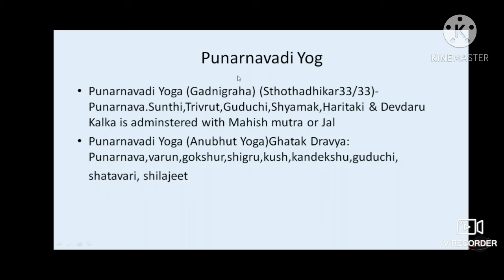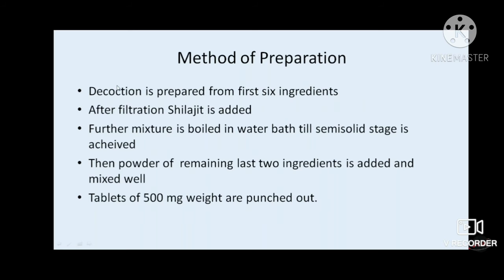One Punarnavadi yoga mentioned in Gadanigraha in Sothara Gadhikara consists of punarnava, shunti, trivrit, guduchi, and shama, administered with mahishmutra (buffalo urine) or water. An anubhuta Punarnavadi yoga on which a clinical trial has been conducted contains punarnava, varuna, gokshura, shigru, pusha, kandekshu, guduchi, shatavari, and shilajit.